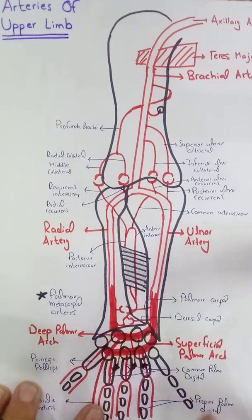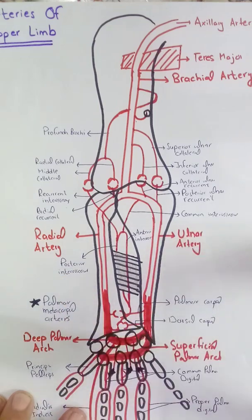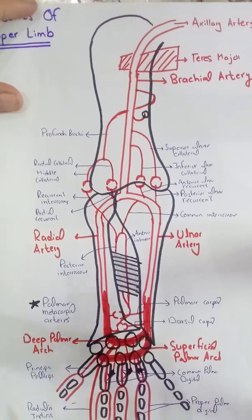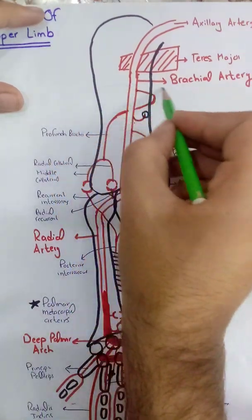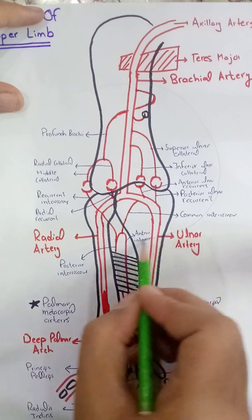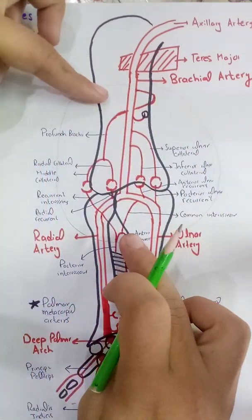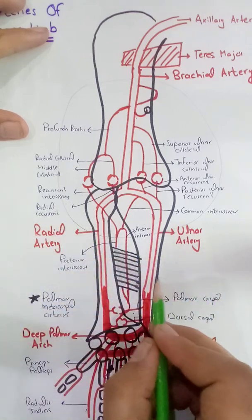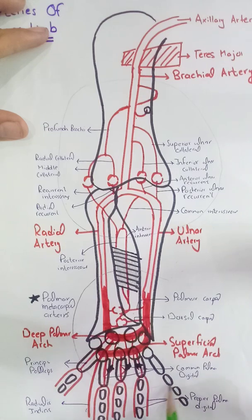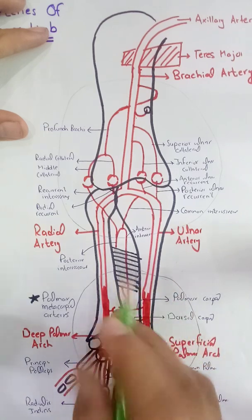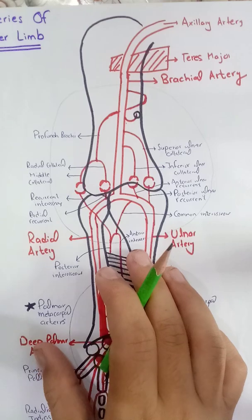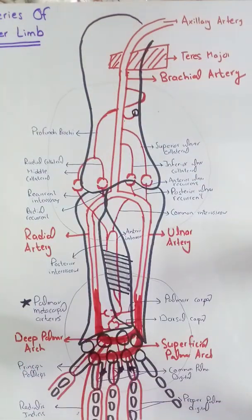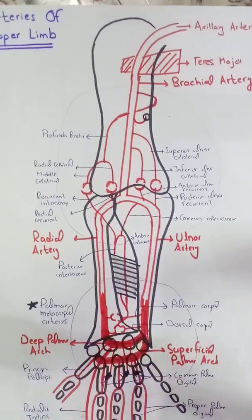This is all the blood supply of the upper limb. Now we can easily draw the anastomosis: if the question is about the anastomosis around the elbow joint, draw from the brachial artery level to the cubital fossa region; if it is about the wrist joint, draw from the wrist area. I will also make a video regarding the axillary artery and the anastomosis around the shoulder joint inshallah in the next video. Thank you.